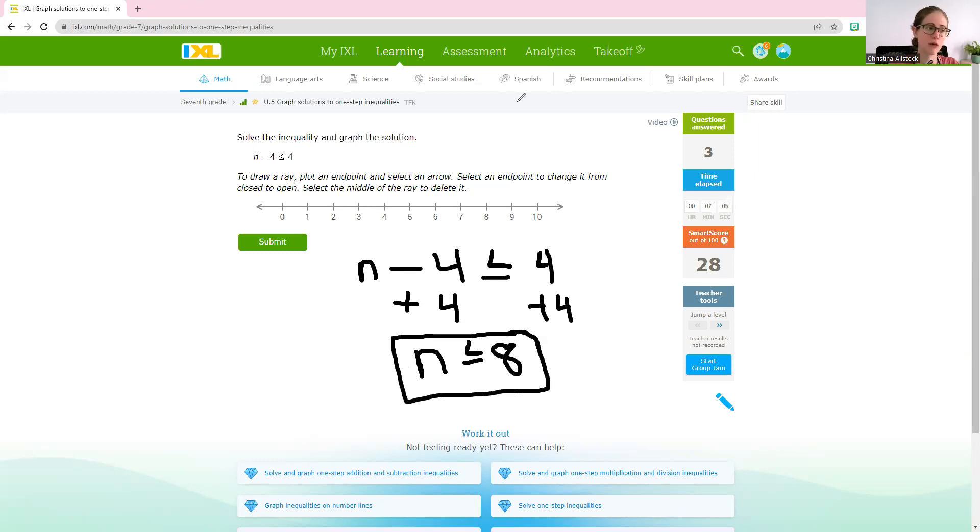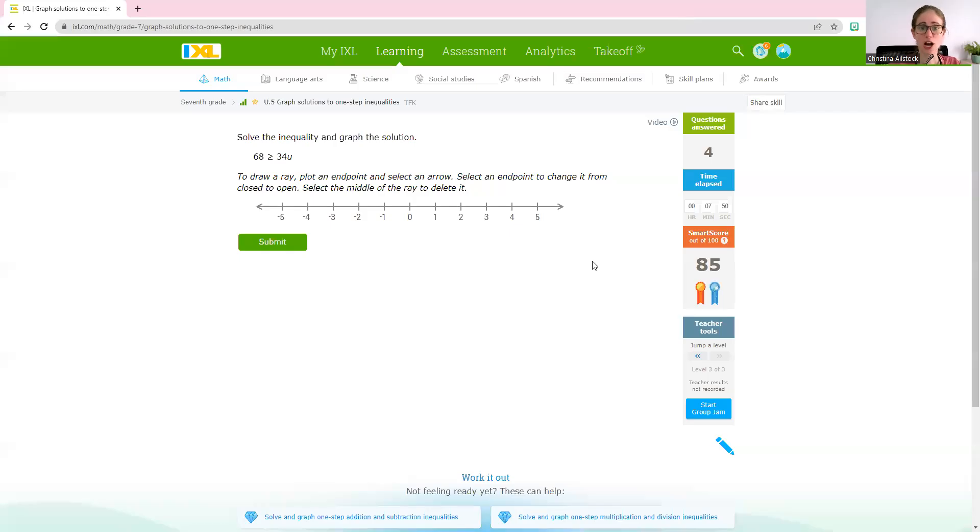What kind of circle would we have, open or closed? It would be closed, because it's an or equal to inequality. And it could include the number 8. So click on the number 8 once. Nice closed circle. n is all of the values less than 8. So it's going to go to the left, because these are all the numbers less than 8. Click on that little arrow. Oh, yep, we want it to be solid. And now we can hit submit.